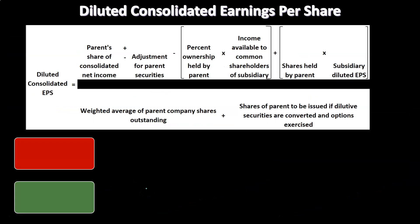Diluted consolidated earnings per share is going to be a more complex calculation in general, even for a single organization. We're basically going to take into consideration those types of securities that could dilute the earnings per share calculation because of a conversion — securities that can be converted into common stock, such as bonds or preferred stock that could be converted into common stock. Those convertible securities make the calculation more complex for the diluted consolidated earnings per share.